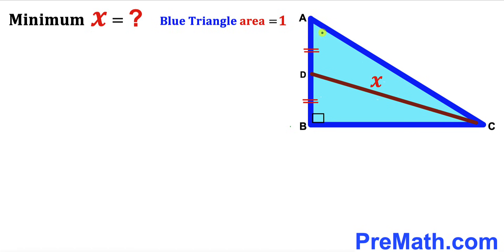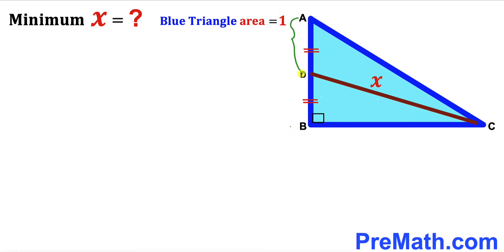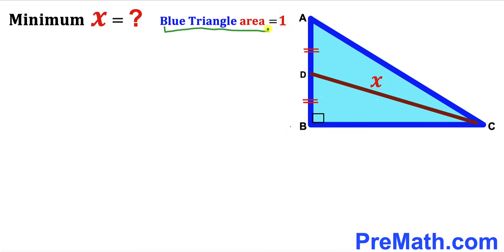Welcome to pre-math. In this video we have got this blue shaded right triangle ABC along with this median CD, such that segment AD length equals segment BD length. The median CD length is represented by X, the blue triangle area is given as one square unit, and our task is to calculate the minimum possible value of X.